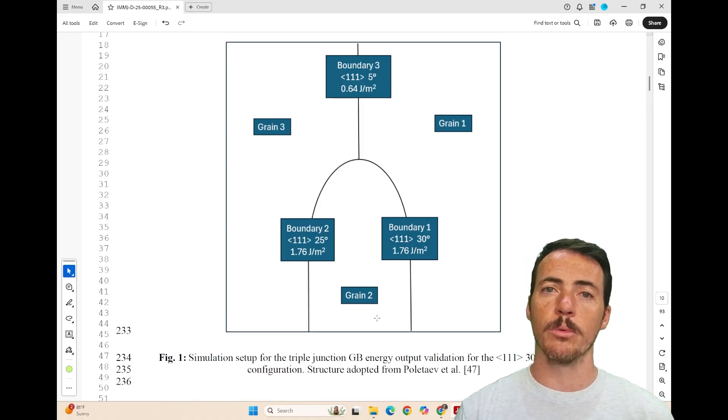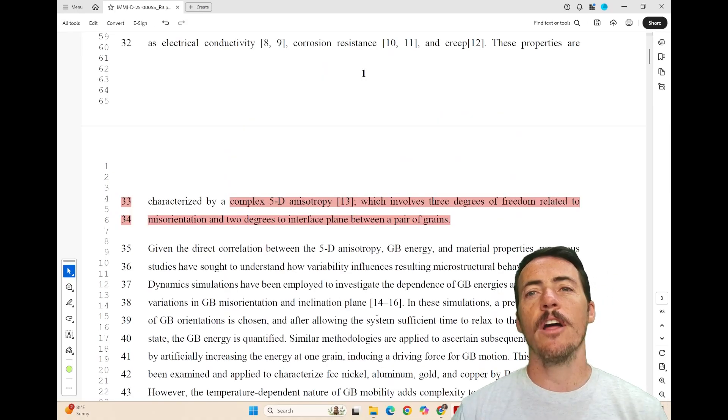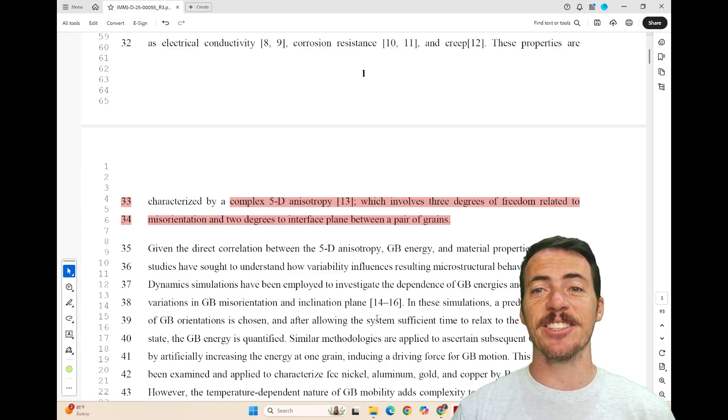And so understanding how this microstructure will evolve has been challenging. The authors point out in the introduction that this is a complex 5D anisotropy. You've got three degrees of freedom related to the misorientation and then two degrees of freedom with respect to the interface between the pairs of grains. So this is complicated to model.